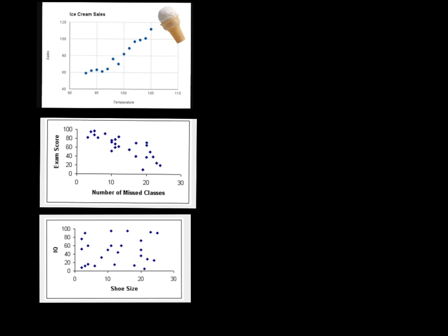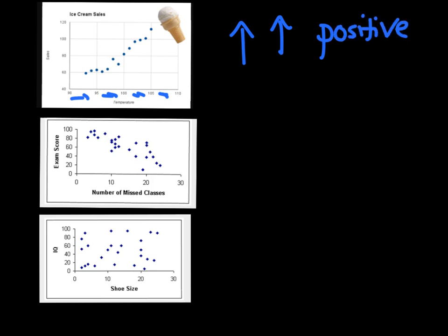The first graph — as my temperature increases going to the right, what's happening to the sales? It looks like they keep going up. So as the temperature gets higher, your ice cream sales keep getting higher. When you see both of the values going up, that's called a positive correlation. You can see that if I try to draw a fitted line through the points — the line is going up. That's called a positive correlation.